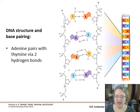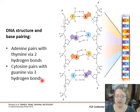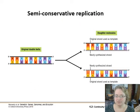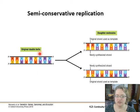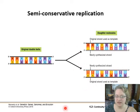Looking at base pairing: adenine and thymine pair with two hydrogen bonds, and cytosine and guanine pair with three hydrogen bonds, making that pair slightly more stable and harder to pull apart. The idea of semi-conservative replication is that the original helix pulls apart — one original strand serves as a template for a newly synthesized strand, and the other side uses its template for another synthesized strand — and that's how you duplicate your DNA.